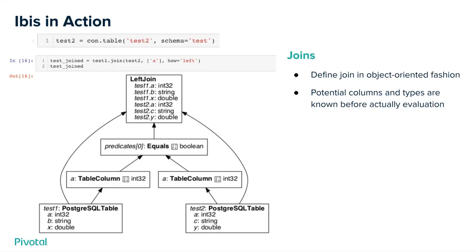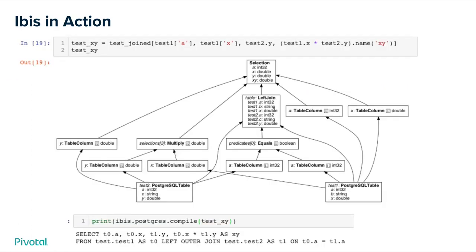Before even computing the results, we know the columns that will be available in the resulting object and their types. We can get even more complicated — on this joined object, we can select certain columns from the source tables, do operations like multiplying certain columns, and do computations on that. Again, it's represented as an object that can be rendered as a diagram. It also gives you a way of showing what SQL query will be generated from this whole process, so you can inspect that. So it's not that we're avoiding SQL entirely — it's still used under the hood — but it allows us to reason about that SQL using visual abstractions that are helpful for data science.